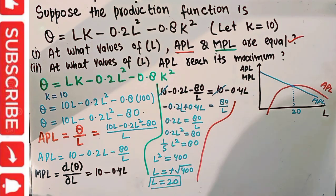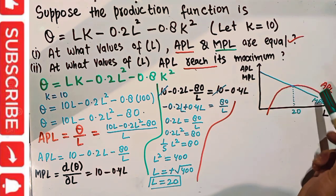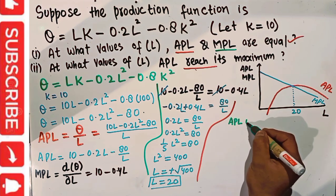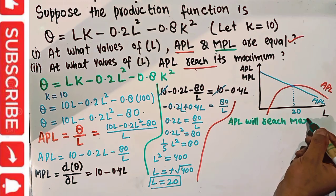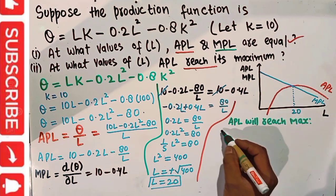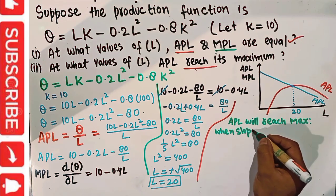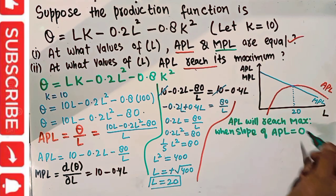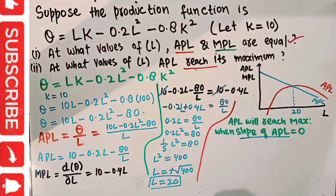The second part asks at what value of L average product of labor reaches its maximum. APL reaches its maximum when the slope of the APL curve equals zero — that is, when the derivative of APL with respect to L equals zero.